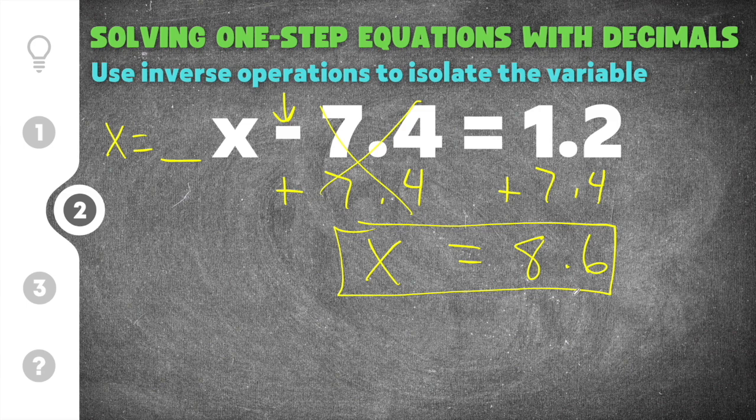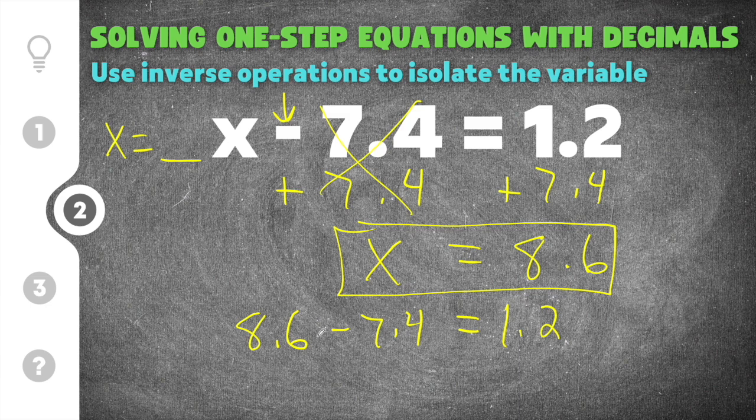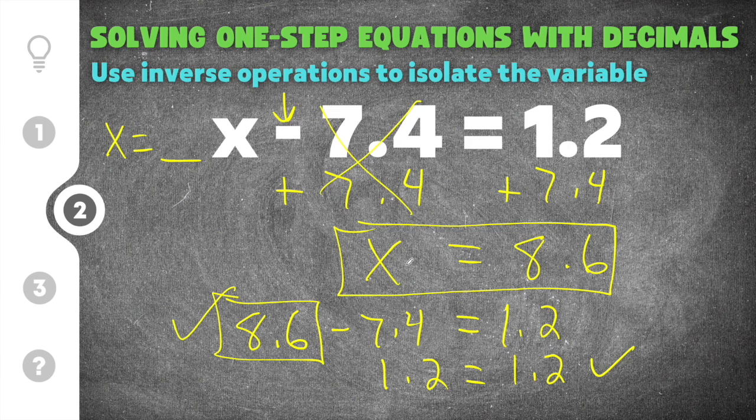Now you can double check your solution by taking 8.6 and plugging it in for x. So we're going to say 8.6 minus 7.4 equals the other part of the equation which is 1.2. When we simplify 8.6 minus 7.4 you get 1.2 equals 1.2. That is a true statement which means that 8.6 checks out and it is a correct answer.